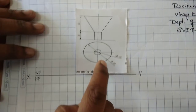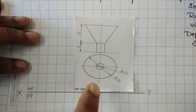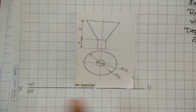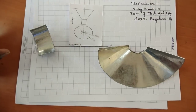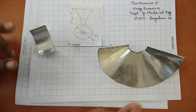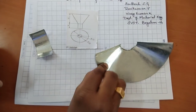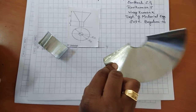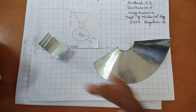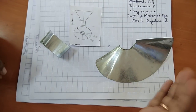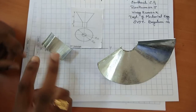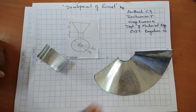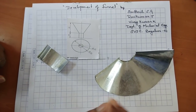This is the given figure, and using it we need to draw the development of the funnel. We will be having two parts: one is the frustum of cone, and the other is a cylinder. We will explain the easiest method for constructing the frustum of cone.